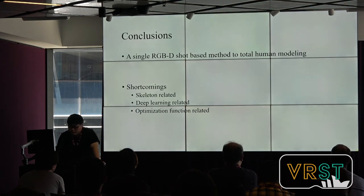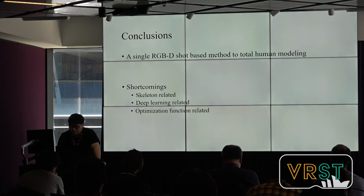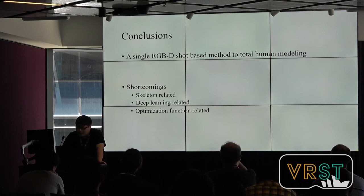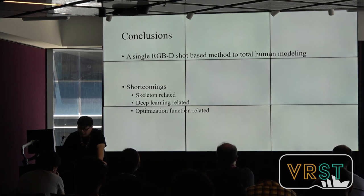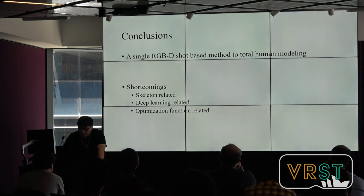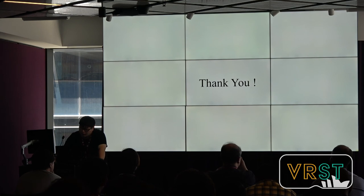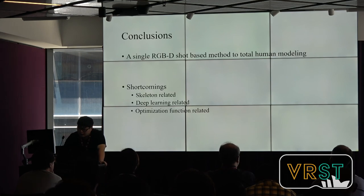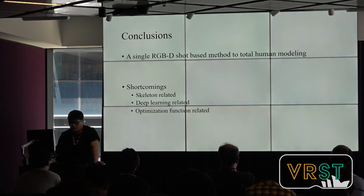Now I am closing my presentation. In this presentation, I introduced our work: a single RGBD shot-based full body modeling method called SRDF. It adopts both RGB and depth images for effective full body modeling, including hand orientation and hand details. Our method also has some shortcomings, which can be divided into three aspects: skeleton related, deep learning related, and optimization related. We need more robust skeleton and deep learning methods and more effective constraints. These are the future works we can explore.